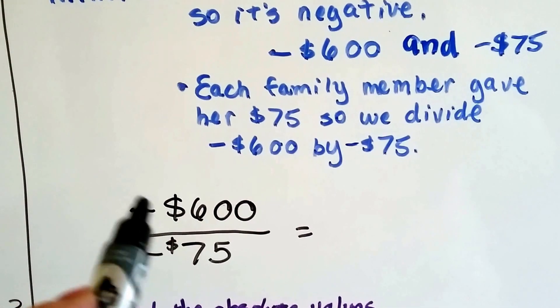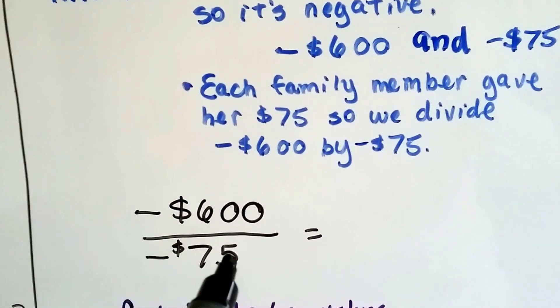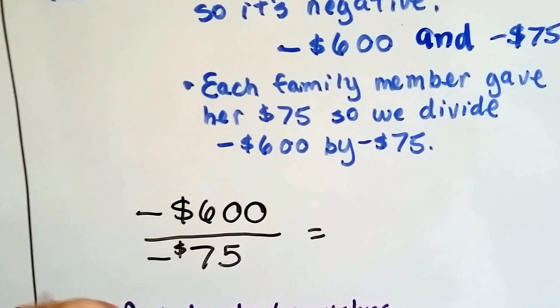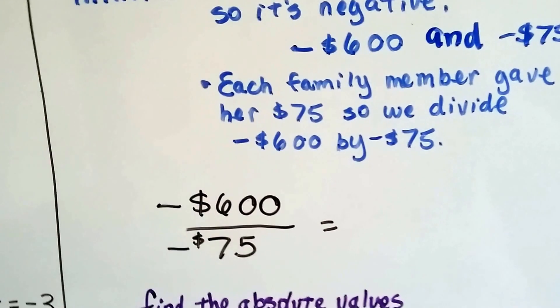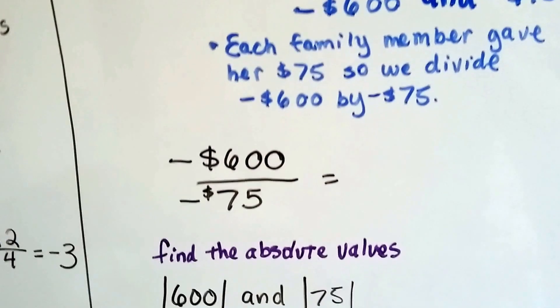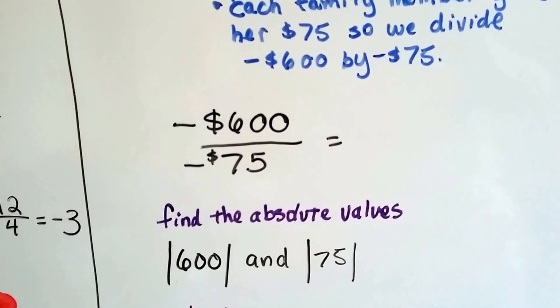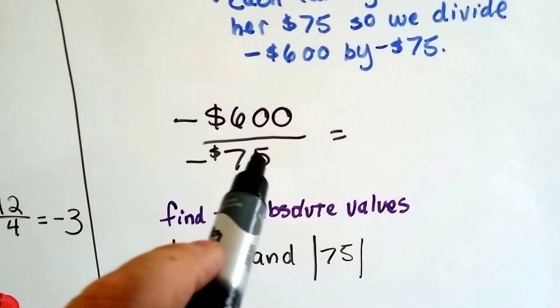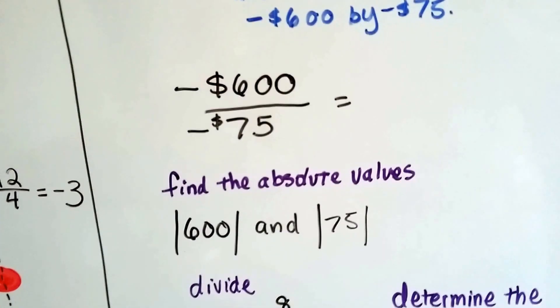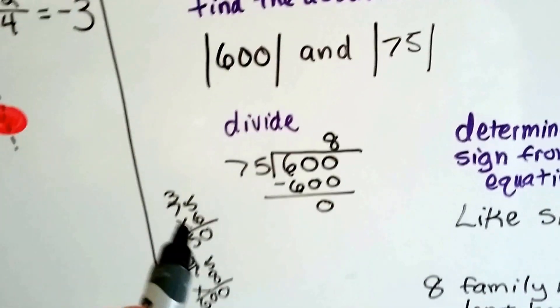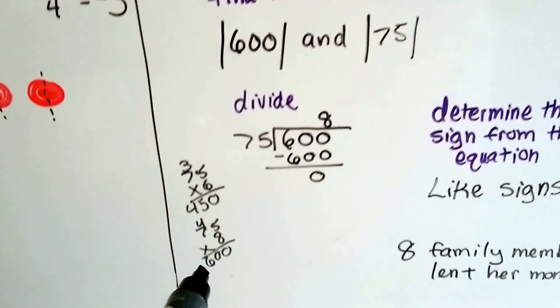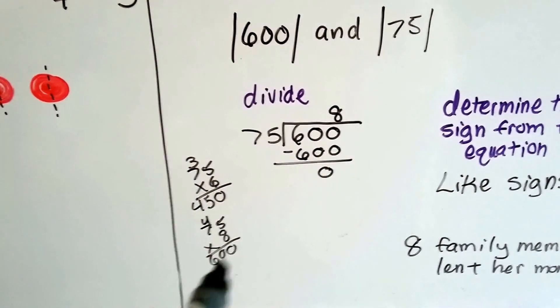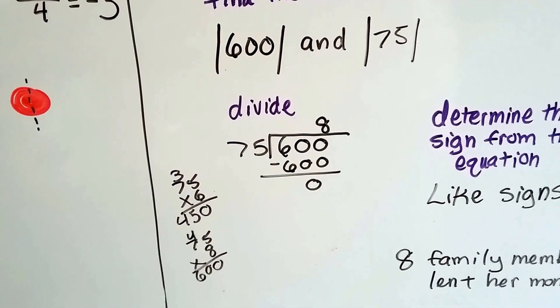Okay. So we have negative 600 over negative 75. Remember, fractions are little division problems, right? So now we need to figure this out. We find the absolute values of both integers. Negative 600's absolute value is 600. Negative 75's absolute value is 75. We divide. I found it easier to do a little multiplication on the side. And I found that 75 times 8 is 600. So I know it's 8 family members.